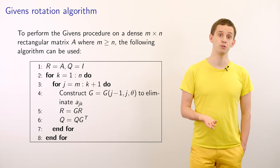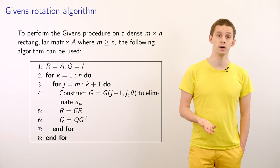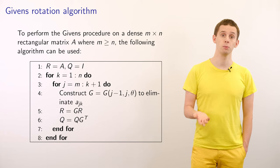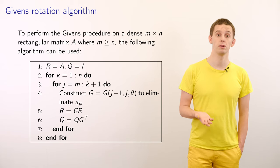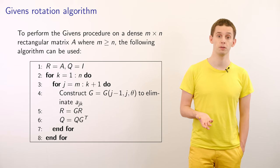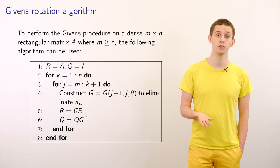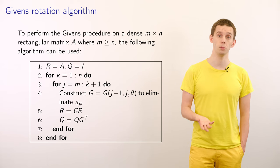We'll then update our R matrix according to R equals GR, and we'll update our Q matrix as Q equals Q times G transpose. And this simple procedure will compute the QR decomposition.